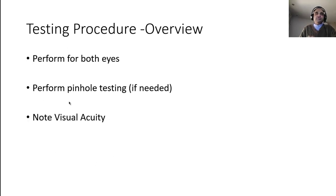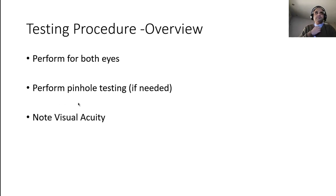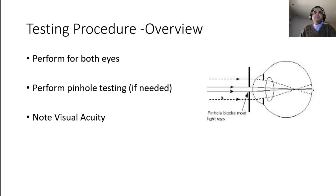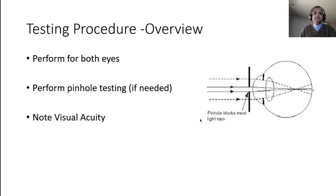General things to remember: perform testing in both eyes, perform pinhole testing if required, and note visual acuity. Always ask whether the patient was wearing glasses, because it is essential to know whether you are testing corrected or uncorrected vision. A pinhole works by limiting rays to the center of the lens, bypassing refraction, and is effective for refractive errors between plus and minus five diopters.